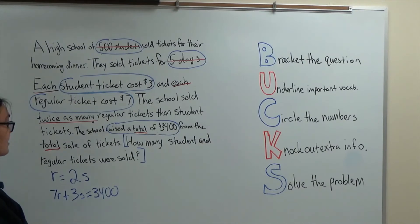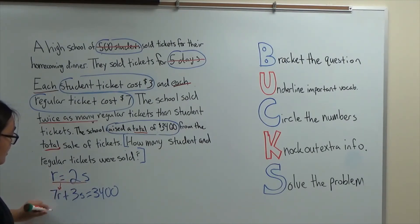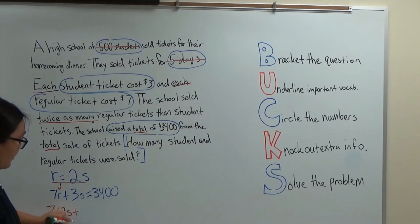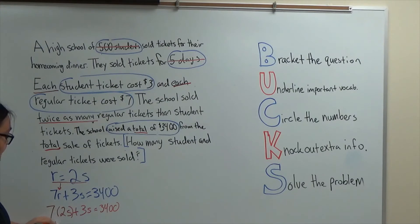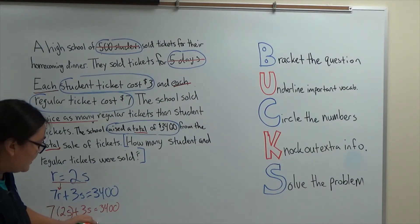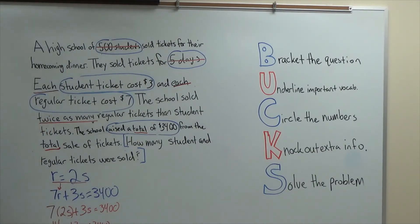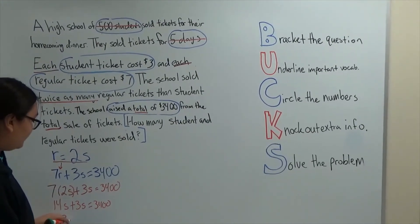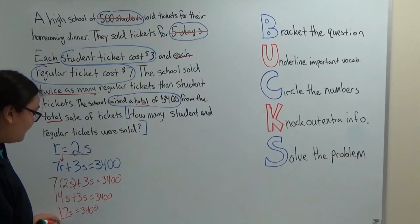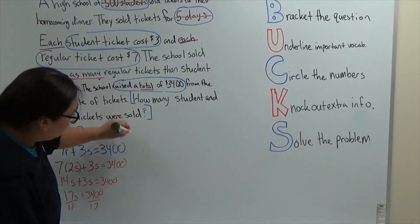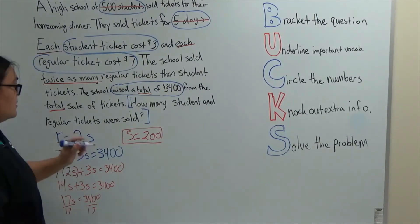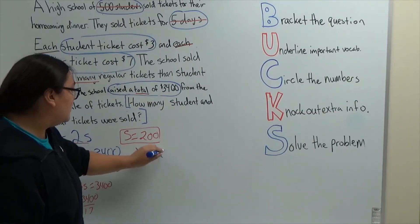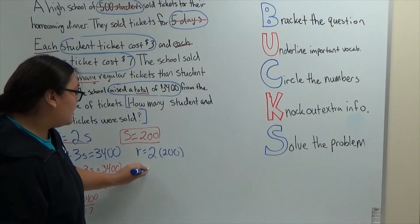Now I can use the substitution method to figure out how many tickets were sold for each. If I substitute R into my bottom equation, I get seven times two S plus three S equals three thousand four hundred. So fourteen S plus three S equals three thousand four hundred, giving me seventeen S equals three thousand four hundred. Dividing by seventeen, my student tickets equal two hundred. Now I can plug that into my top equation: R equals two times two hundred, so R equals four hundred.